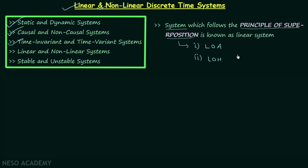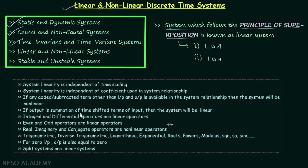After solving many examples we obtained a few important conclusions, and in this lecture we will only use those conclusions to solve the questions. Even in the continuous time systems chapter, we used those conclusions to solve questions directly, because using the conclusions or properties we can directly mark the answer — there is no need to check the law of additivity and law of homogeneity.